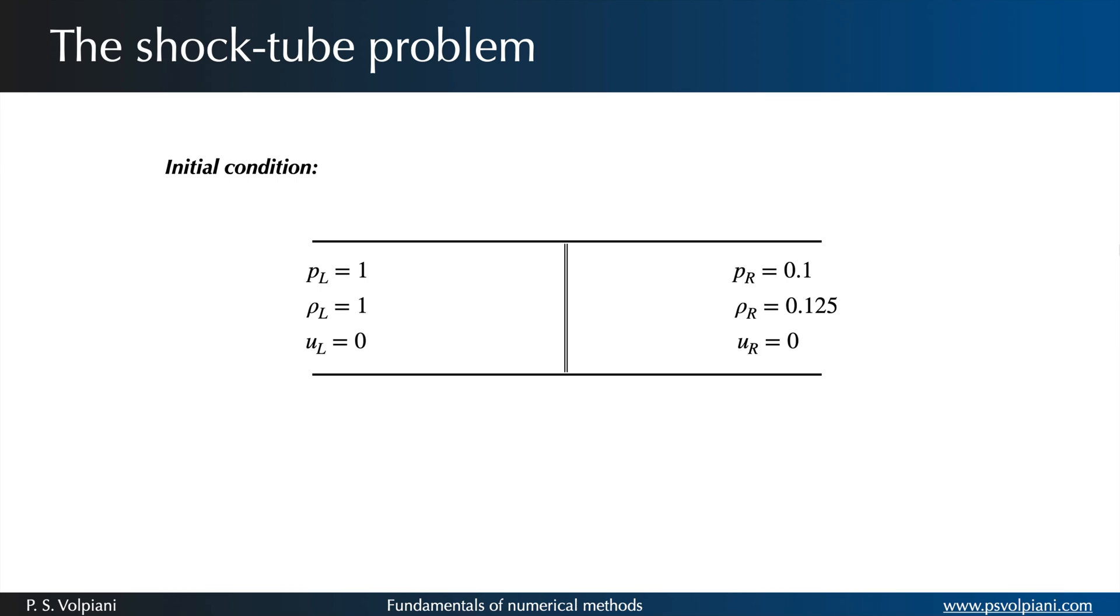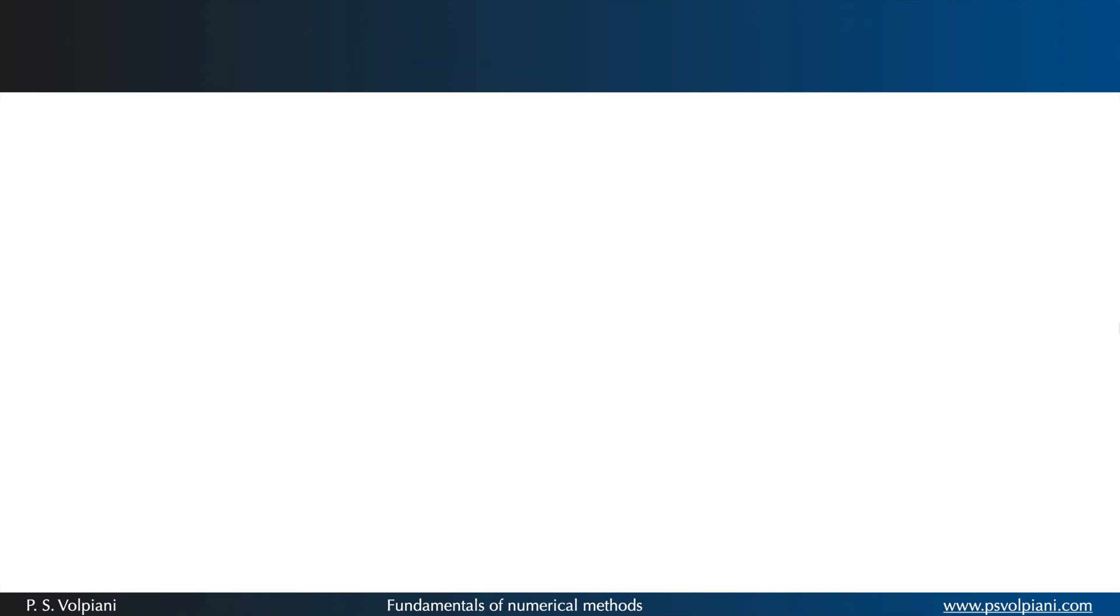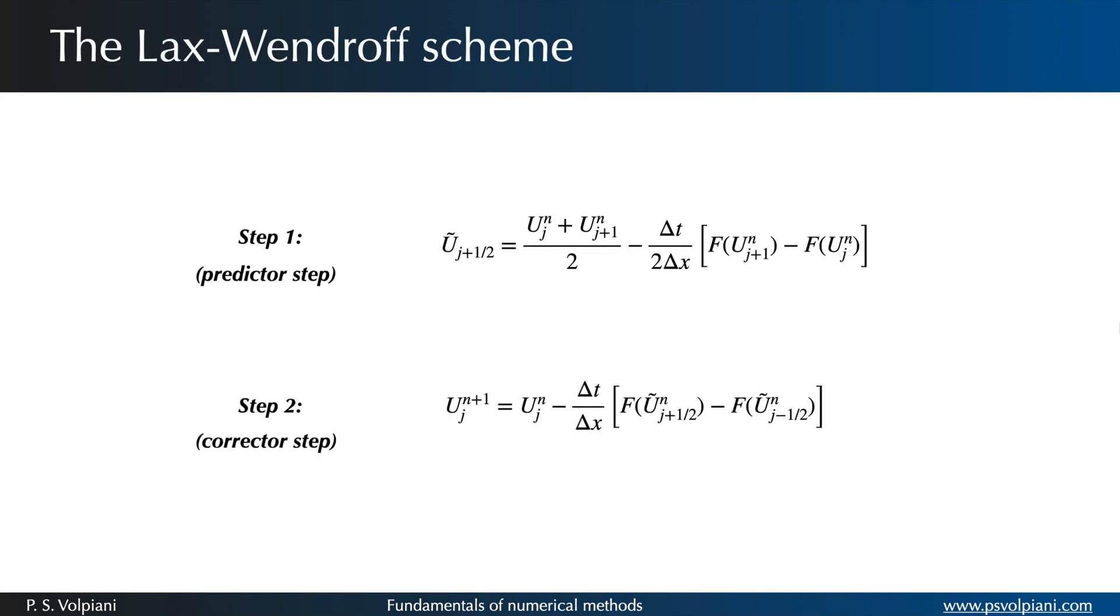In our computer program, we are going to specify the following quantities. For the Lax-Wendroff scheme, the numerical solution at iteration n plus 1 and cell j is computed in two steps. The first one, the predictor, and the second, the corrector step.